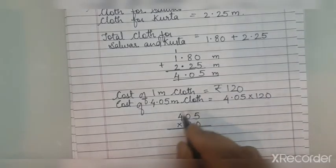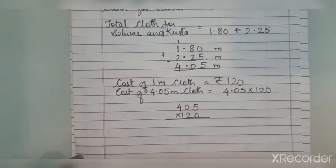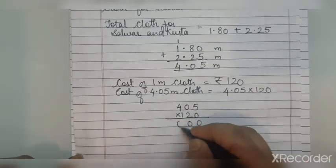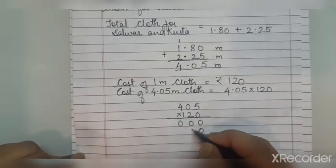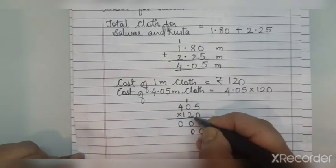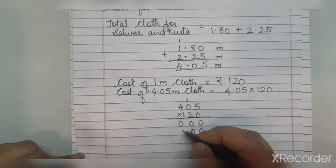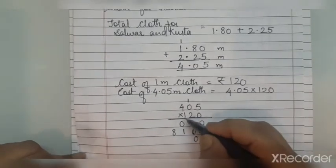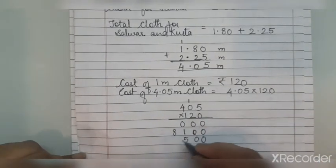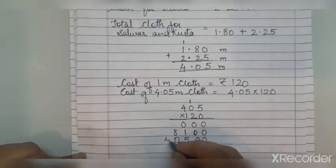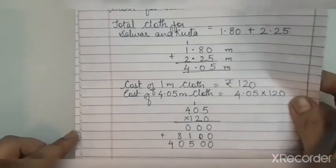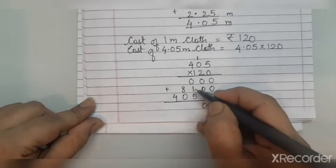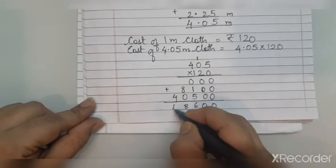We carry out regular multiplication. 5 times 0 is 0; 0 times 0 is 0; 4 times 0 is 0. Then put a zero, then: 2 times 5 is 10, so write 1 carry, 0 here; 2 times 0 is 0 plus 1 is 1; 2 times 4 is 8. Then put two zeros for the third row: 1 times 5 is 5; 1 times 0 is 0; 1 times 4 is 4. Adding: 0, 0; 5 plus 1 is 6; 8 and 4.